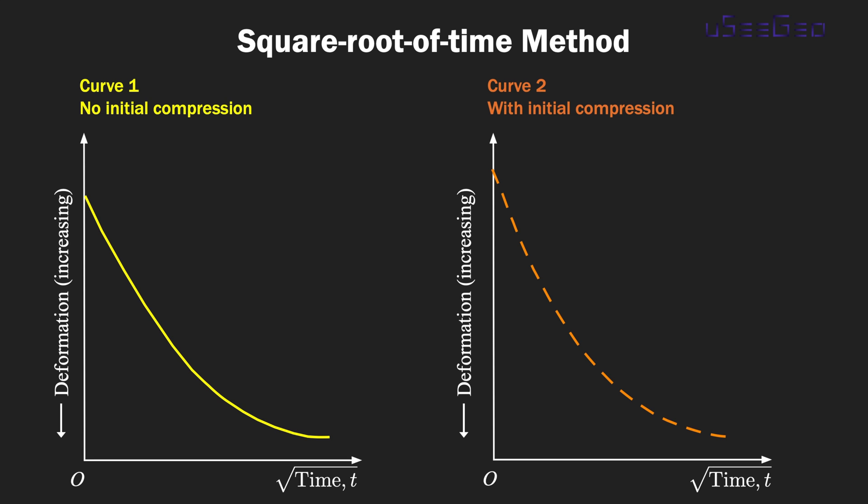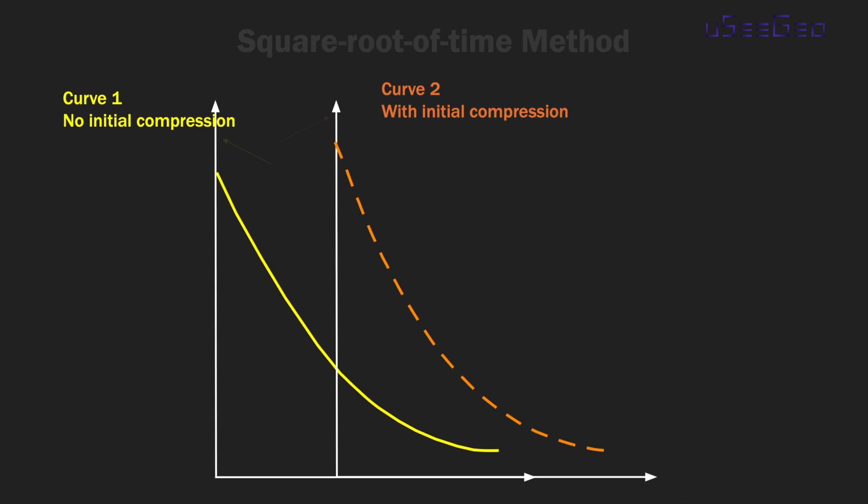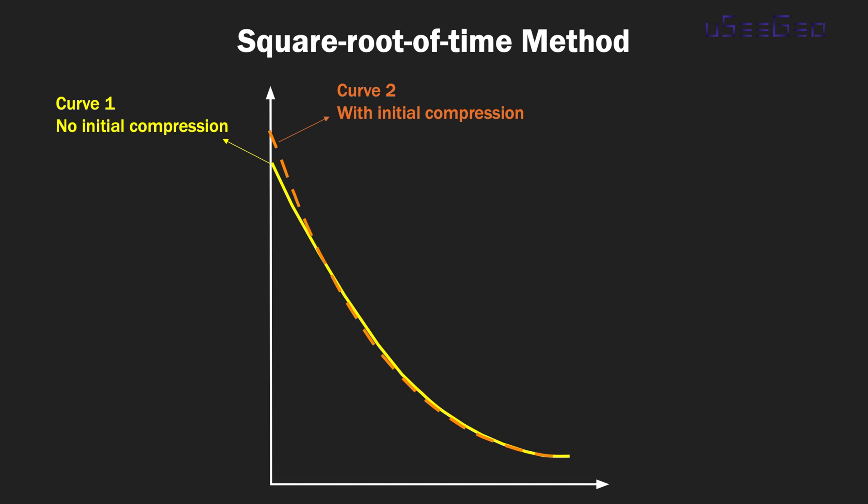I put these two types of curves side by side. If we put these two curves right on top of each other, you will notice that the difference lies in the initial stage. For curve number one, there's no initial compression. This is the case, for instance, when you're plotting the incremental loading data, say from 100 kilopascals to 200 kilopascals. Curve number two has a clear initial compression stage where there's a rapid increase of deformation. This may be the case where you're using the initial loading increment from your consolidation test. Depending on what curve you got, the steps you take to get the coefficient of consolidation are slightly different. I'm going to go over both curves in this video.